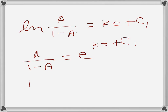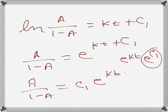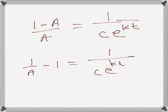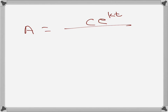Removing the logarithm, A / (1 - A) = e^(kt + C₁), which we rewrite as C·e^(kt), where C = e^(C₁). Inverting, (1 - A) / A = 1 / (C·e^(kt)). Rearranging gives A = C·e^(kt) / (1 + C·e^(kt)).